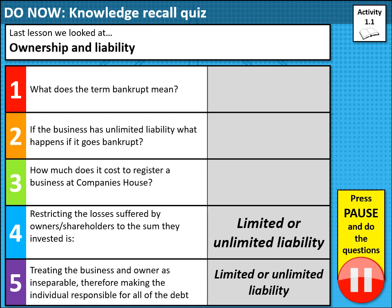First of all, we're going to do a little knowledge recall quiz from last lesson. Last lesson we looked at ownership and liability and we discussed bankruptcy, what unlimited liability meant, how much it costs to register a business at Companies House, and restricting the losses suffered by owner or shareholders. We also looked at treating the business and owner as inseparable, making the individual responsible for all their own debt. Have a pause and look at that — it's Activity 1.1 in your workbook.